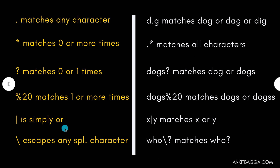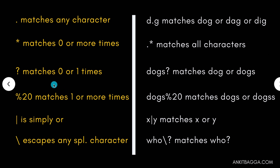The pipe symbol stands for OR, and the backslash escapes any special character. So if there is a special character like a question mark — which normally stands for zero to one matches — you can escape it with a backward slash. So who-backslash-question-mark matches who with a literal question mark.